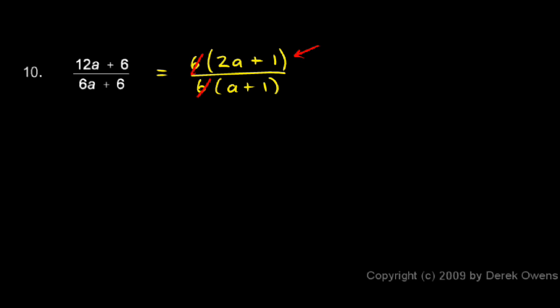This 2a plus 1 cannot cancel with that. I can't cancel these a's, and I certainly can't cancel these 1's. I can only cancel factors, and 2a plus 1 is not the same factor as a plus 1. So only the 6s cancel, and I'm left with 2a plus 1 over a plus 1.